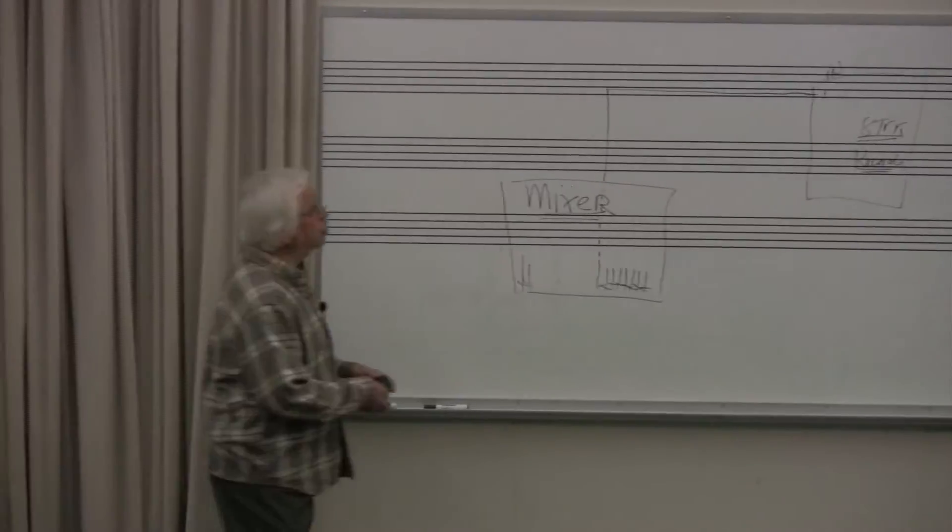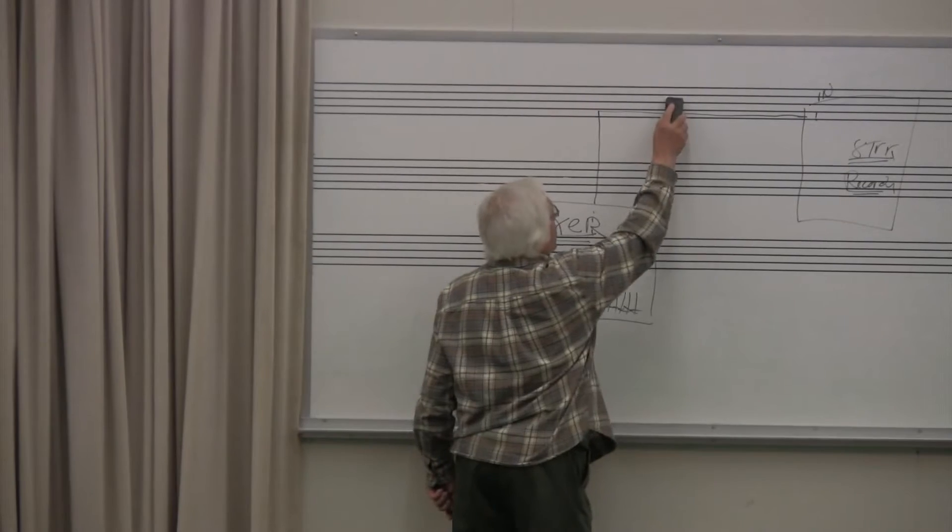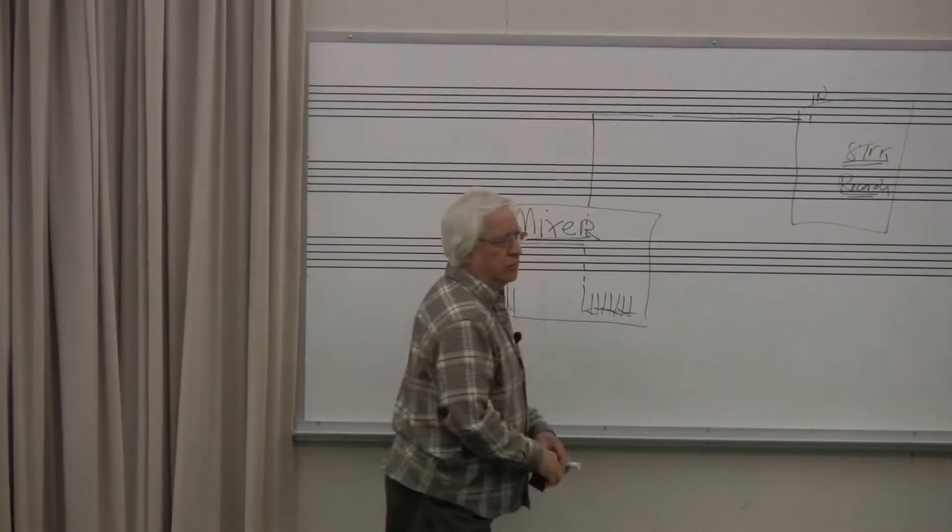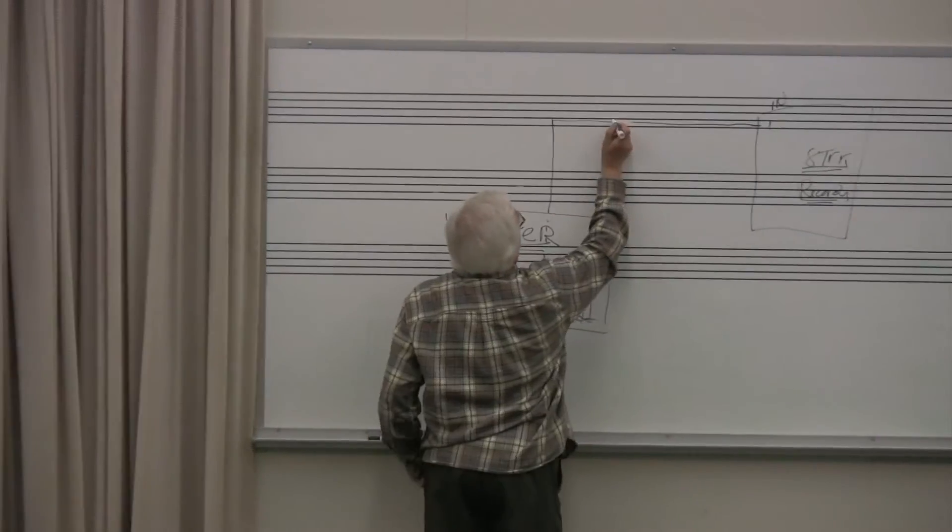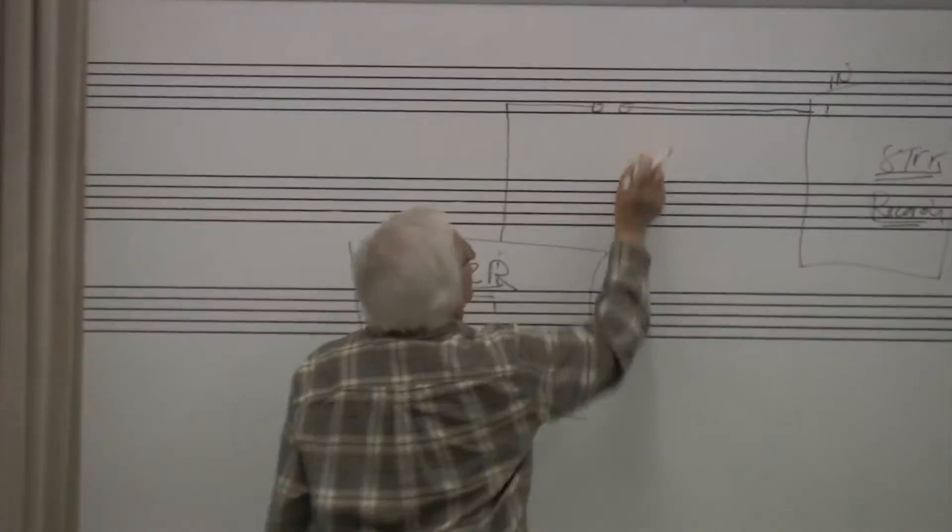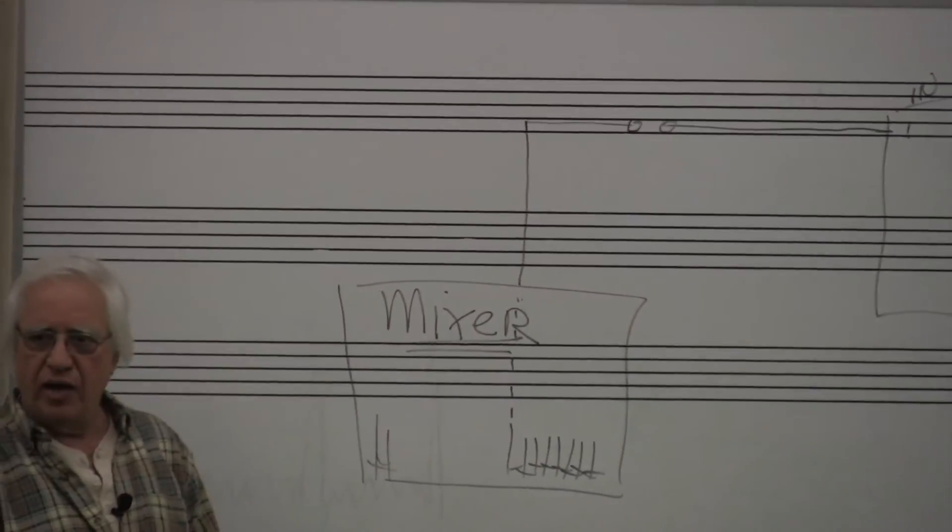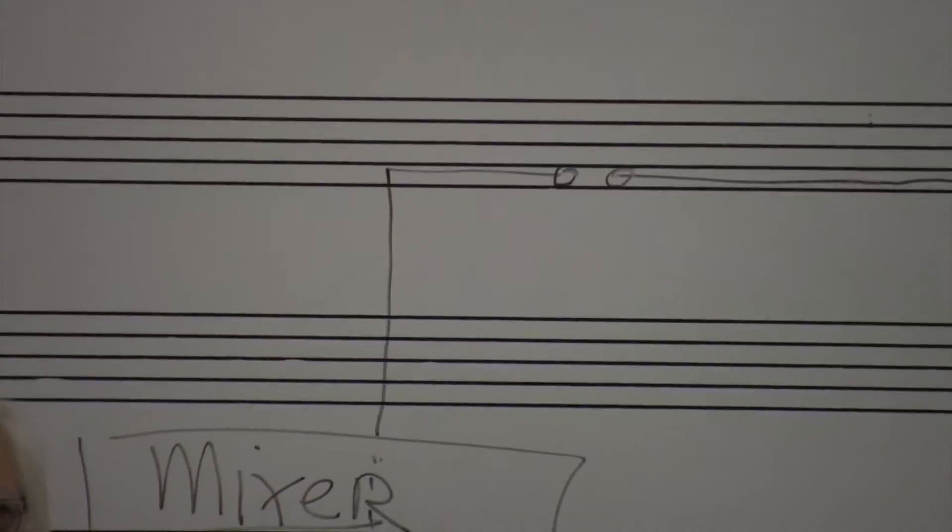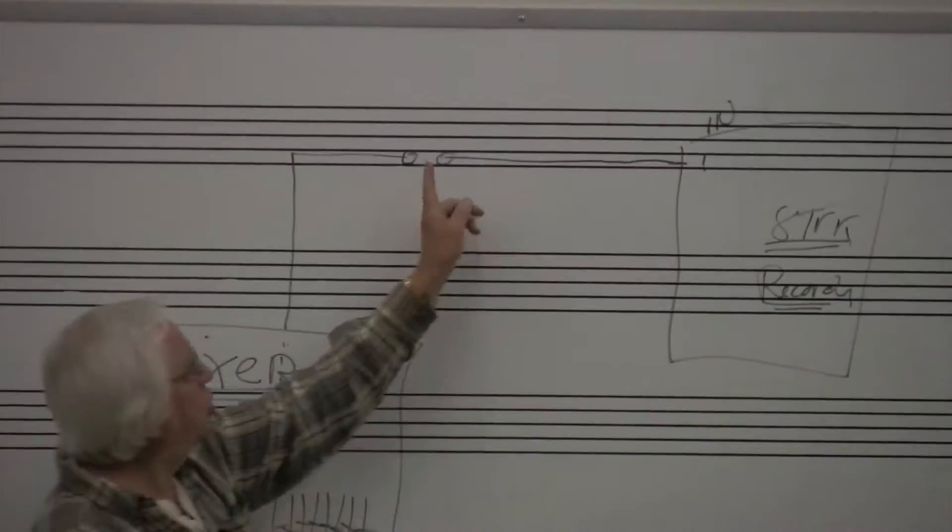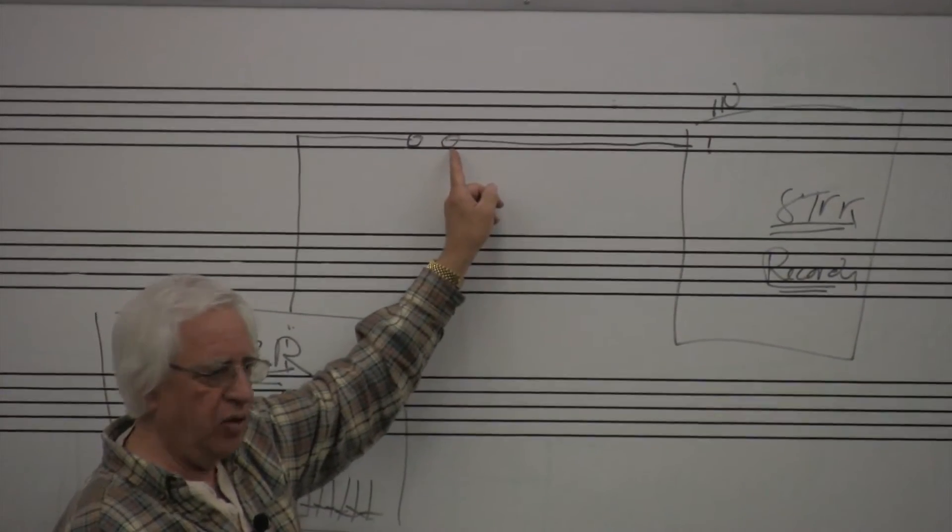If you want to put a patch bay in, all you're doing is cutting the wire. Cut the wire there. I put a hole on this side and a hole on this side. So now what do I have at this hole? I can plug something in there and access bus one output.